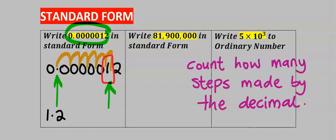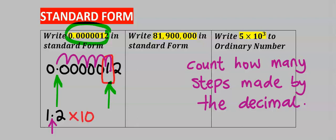Next, count how many steps made by the decimal — which is one, two, three, four, five, six — to generate 1.2. I will multiply 1.2 by 10. Next, I will consider how many steps the decimal made to move to this position, which is six. However, this value is a very small value, hence this six will become minus six.